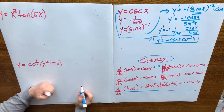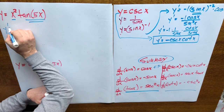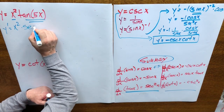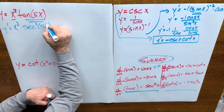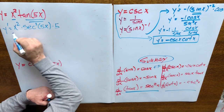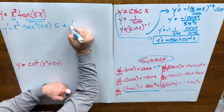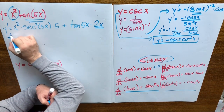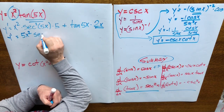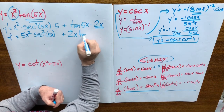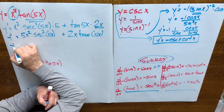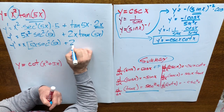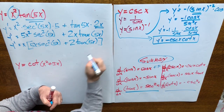Here's an opportunity to use the product rule. We have a first and second factor. Y prime equals: first, x squared, times the derivative of the second — the derivative of tan x is secant squared, so it's secant squared of 5x — plus the second, tan 5x, times the derivative of the first, which is 2x. So y prime equals 5x squared secant squared 5x plus 2x tan 5x. We can common factor out an x: x times (5x secant squared 5x plus 2 tan 5x).